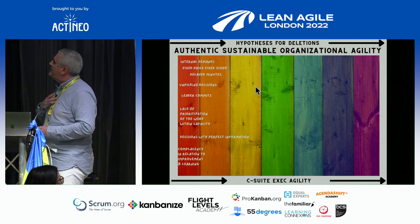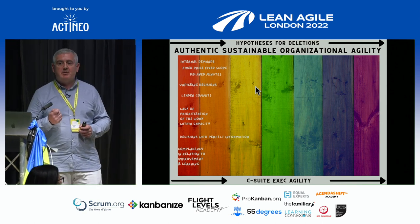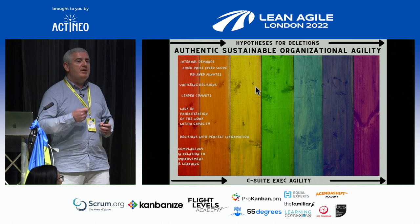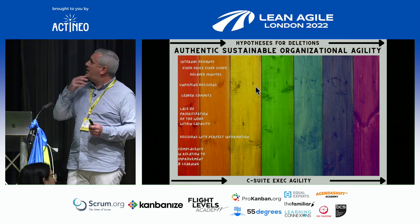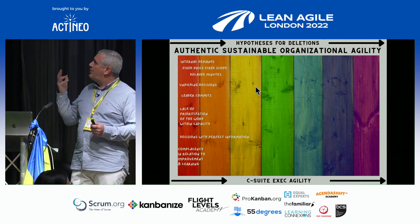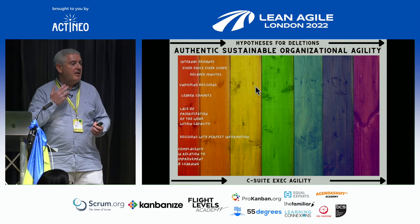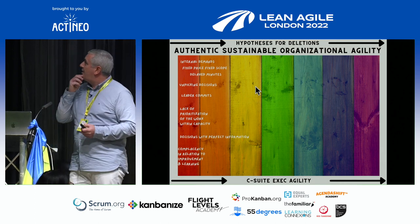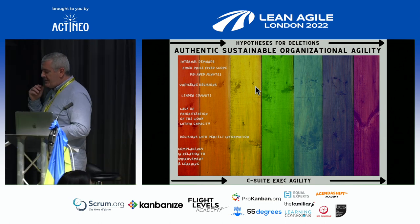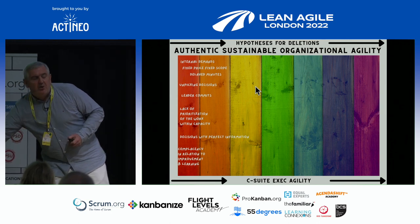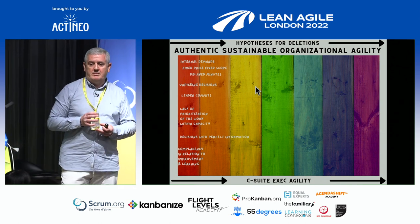The first set of deletions I'm recommending: internal demands — 'this work will be done by this day.' We know there are some external forces, we need to comply with the law. Fixed price, fixed scope initiatives really demanded on teams, with teams having no say, not even consulted about when they could deliver. A really interesting one is delayed minutes — I came across a situation where an organisation was delaying the minutes by about three weeks.